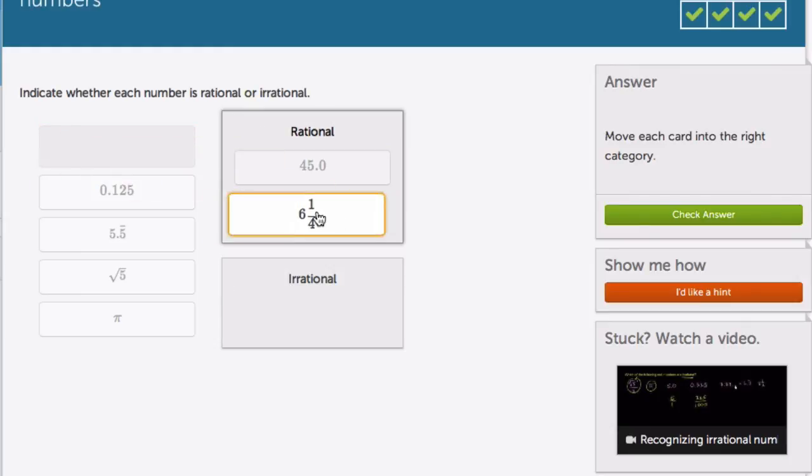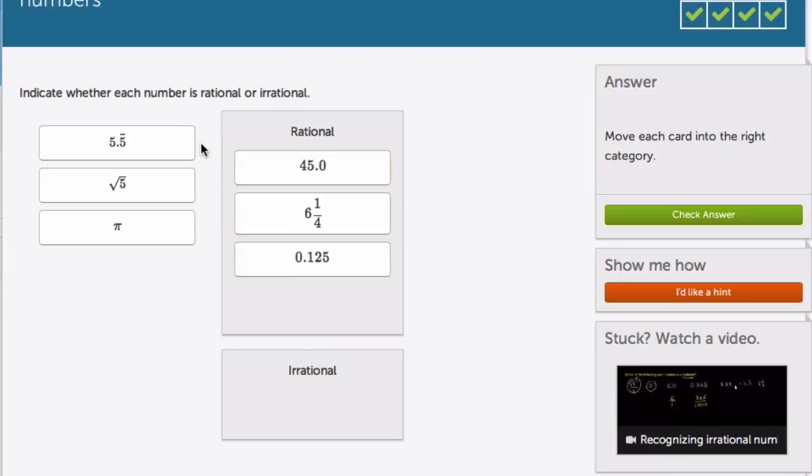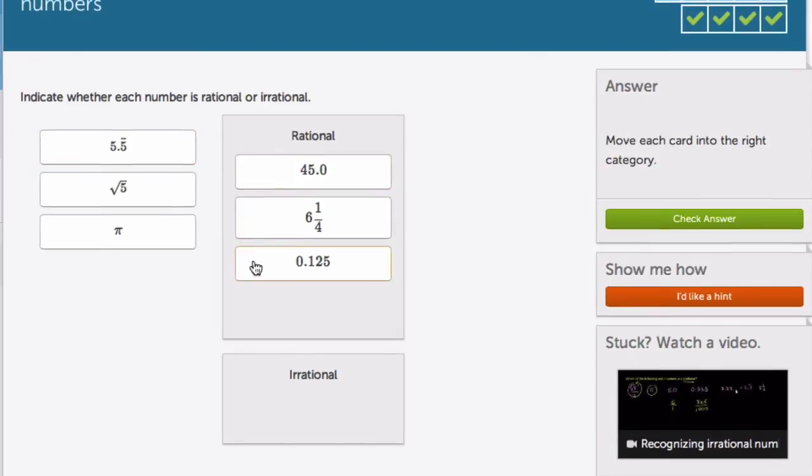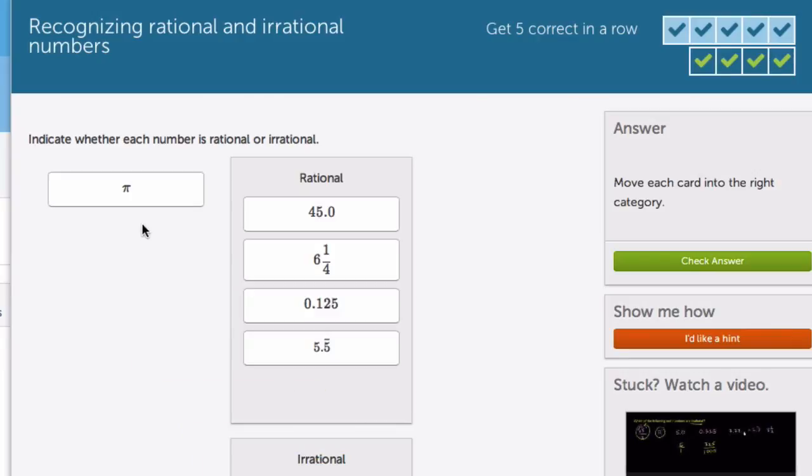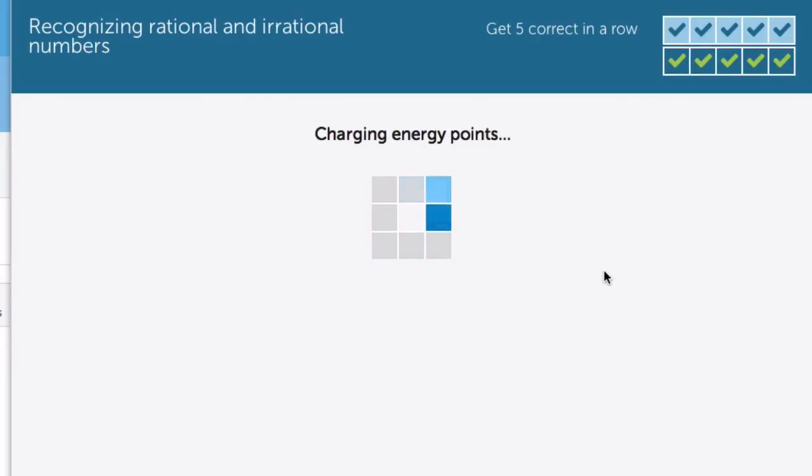Last one: 45 is rational. 6 1/4 and 0.125 can be turned into simple fractions. 5.5̄ repeating is rational, and the last two are irrational. All right, so I hope this helped. Thanks a lot.